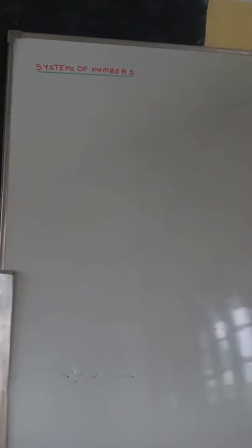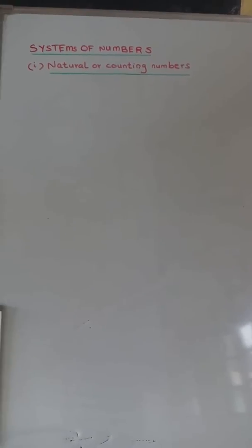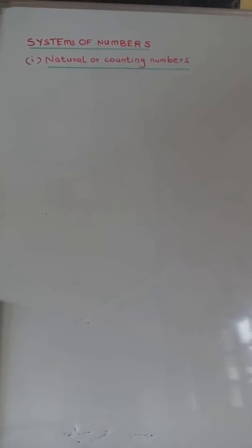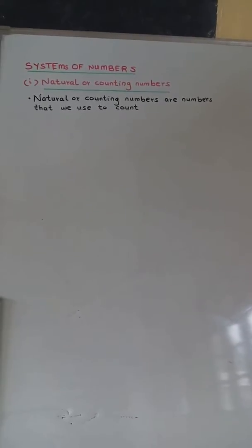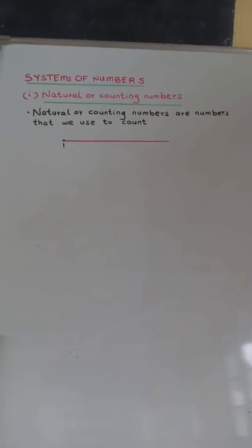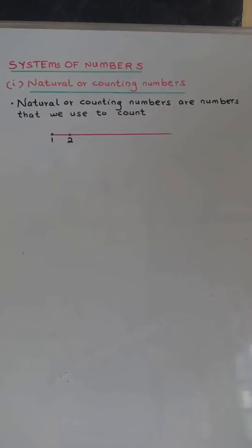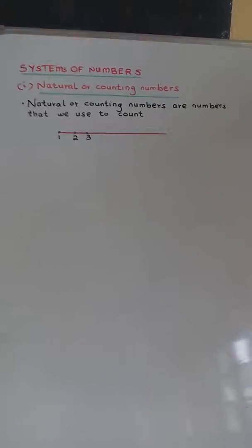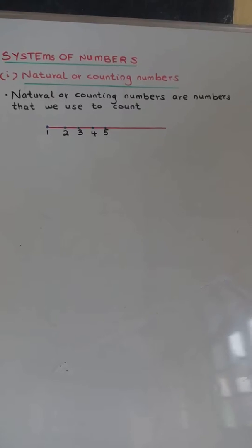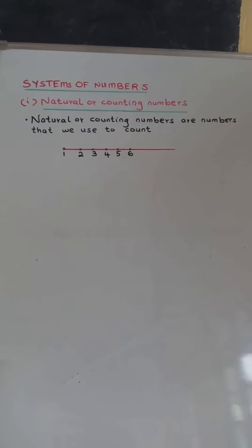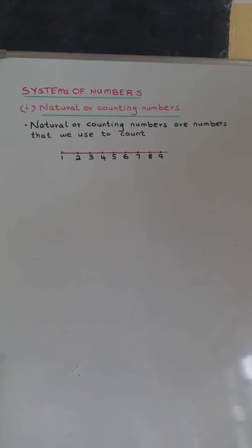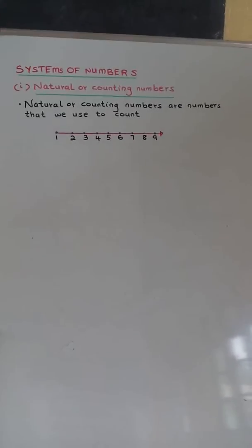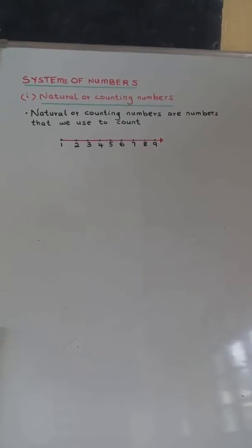Systems of numbers. Natural or counting numbers. Natural or counting numbers are numbers that we use to count starting from one, two, three, four, five, six, seven, eight, nine, and so on.